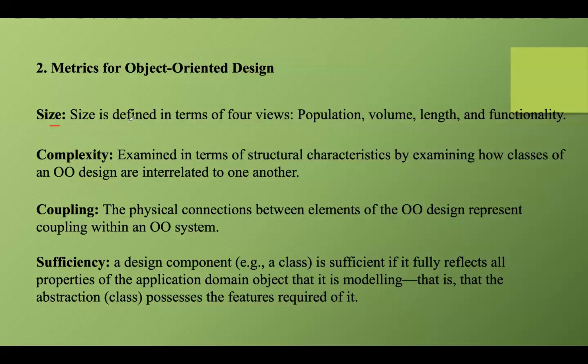Some important size metrics include: lines of code, which measures the total number of lines in a class or module; number of classes, which counts the total number of classes in a system and provides the design's breadth and potential modularity; and number of methods, which indicates the total number of methods within a class. Complexity measures the number of independent paths through a method or class, indicating its complexity — a higher value suggests more complex code that may be harder to test and maintain.